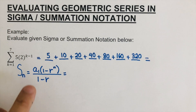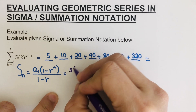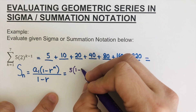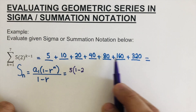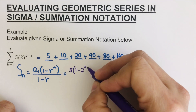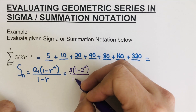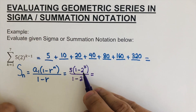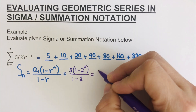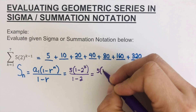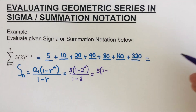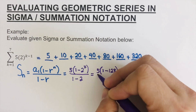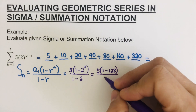The first term is five. So we have five times (1 minus 2 to the power seven) over (1 minus 2). We simplify: two to the power seven, using the calculator, is 128. And one minus two is negative one.